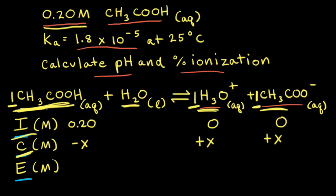The equilibrium concentration of acetic acid would be 0.20 minus X. The equilibrium concentration of hydronium would be zero plus X, which is just X. And for acetate, it would also be zero plus X, so we can just write X.